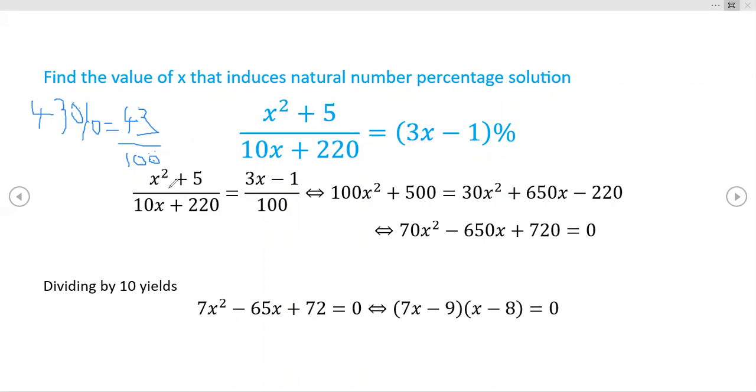And then two fractions can be equal if and only if the cross multiplications are equal. And so, this is what happens right here. When you cross multiply from here to here, you get this statement on the left-hand side, 100x squared plus 500. And then it took a little bit of work. You had to distribute everything out here. But when you multiply 10x plus 220 times the quantity 3x minus 1, you get these three terms on the right-hand side.